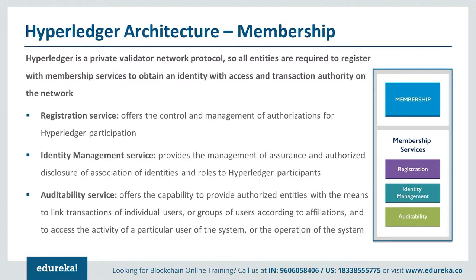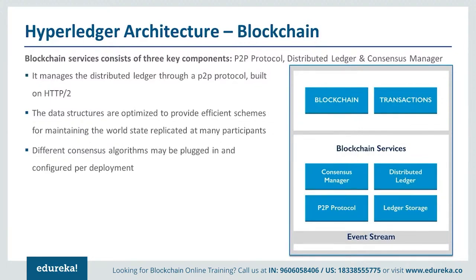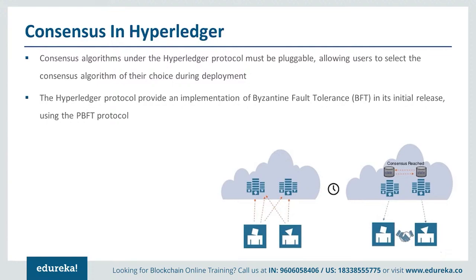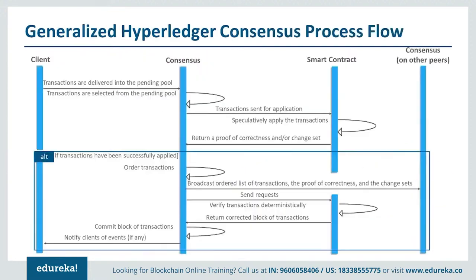For peer-to-peer protocol, it uses an HTTP-like service where messages are transferred from one node to another. The data structures are optimized to provide efficient schemes for maintaining the world state replicated at many participants — stored as LevelDB or CouchDB. Different consensus algorithms may be plugged in and configured based on how you want the network to look. Chaincode is your smart contract — a piece of code that reads and writes values to the ledger — present only at endorser nodes. The chain code service uses Docker to host the chaincode.